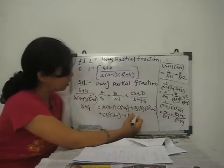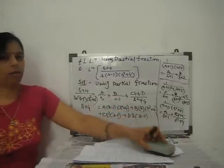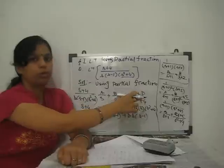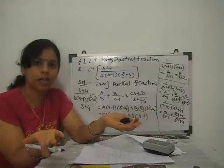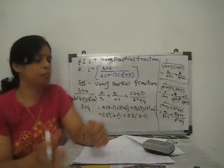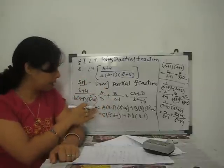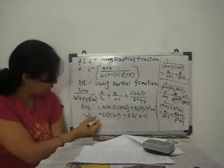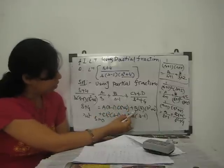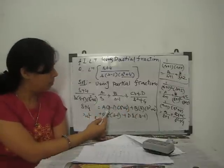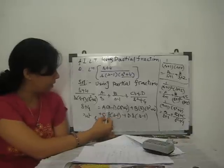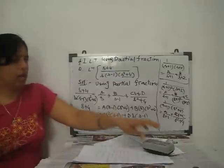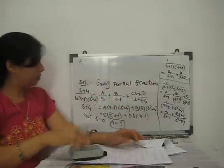After expanding and collecting terms, we get an equation to find the values of A, B, C, and D. We substitute specific values of s. First, put s = 0: the s(s−1) and (s²+4) terms reduce, and only A contributes. We get A times (−1)(4) = 4, so −4A = 4, giving A = −1.